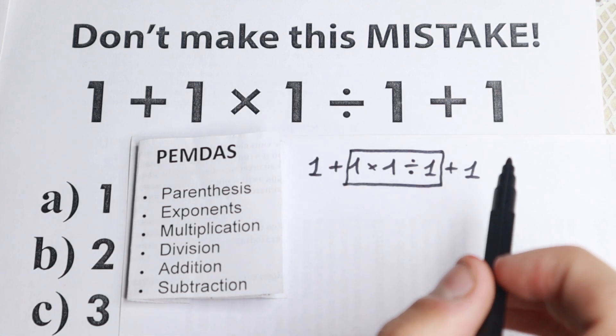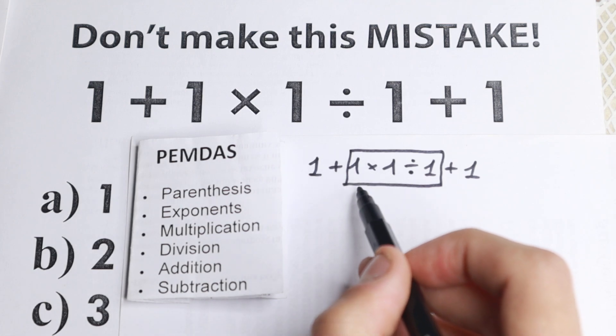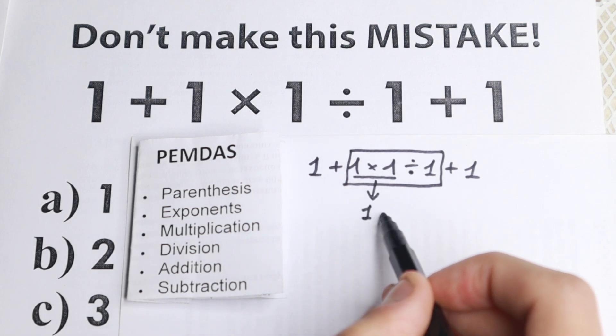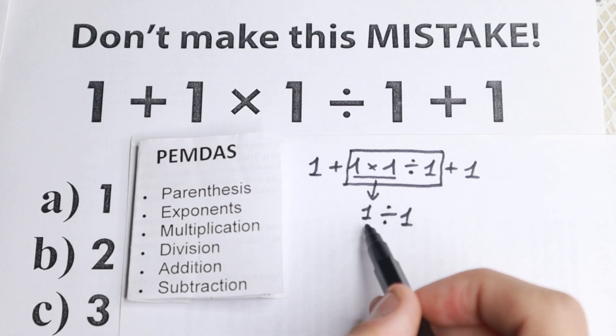We see multiplication, so we start with this multiplication. 1 × 1, we start with this multiplication, equal to 1. And then we have division. So divided by 1. We can easily find it. So 1 ÷ 1, equal to 1.